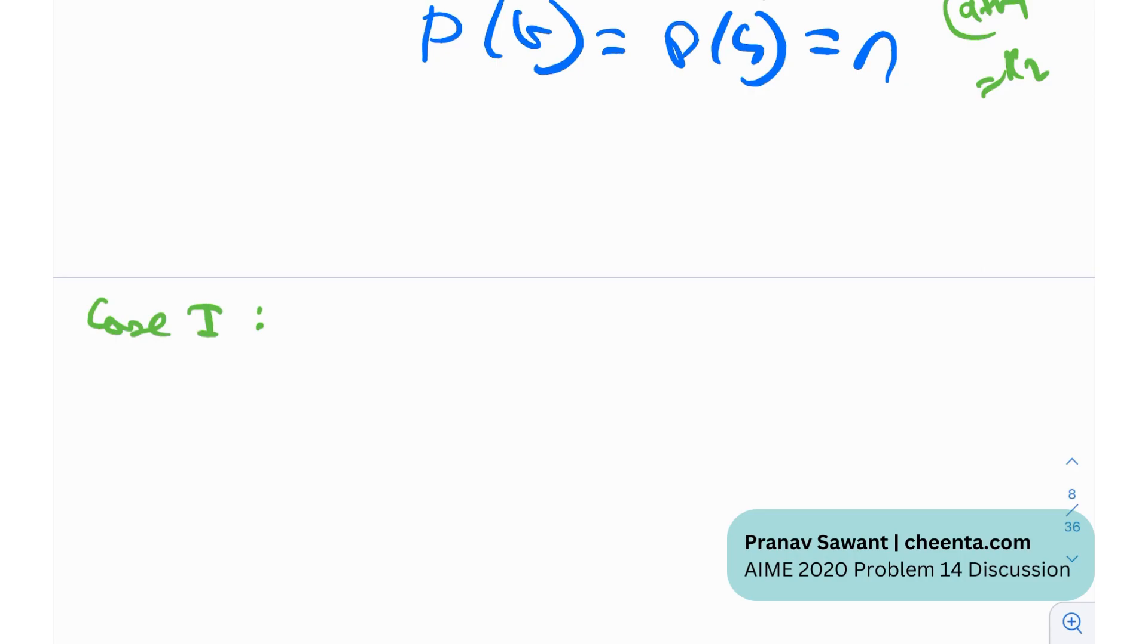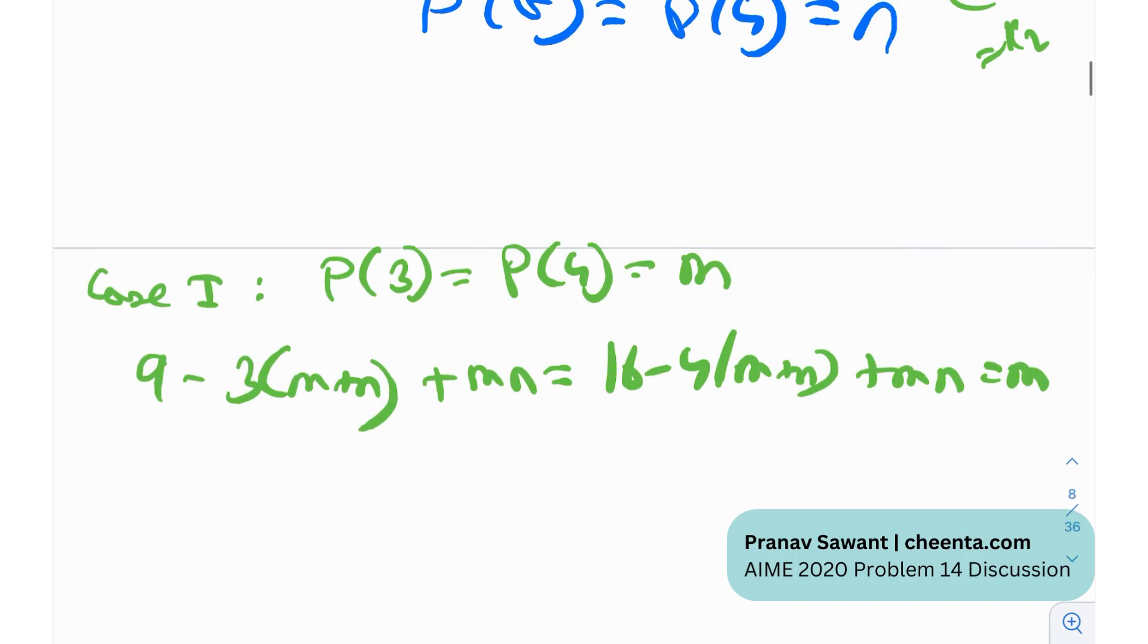So what do we have in case one? We have p of 3 equals p of 4 equals m. So if I just plug in p of 3 into the given polynomial, I get 9 minus 3 times m plus n plus mn equals 16 minus 4 times m plus n plus mn, and that will be equal to m of course. And if I just simplify this, I will get m plus n equals 7.